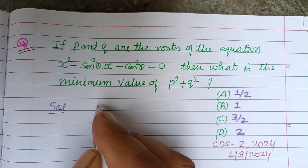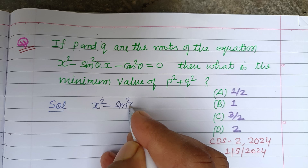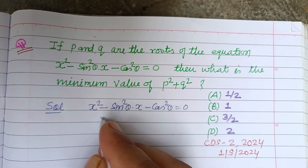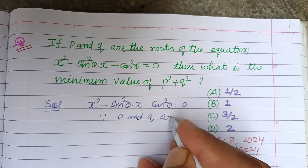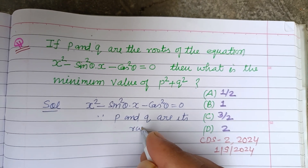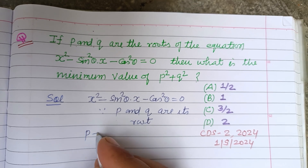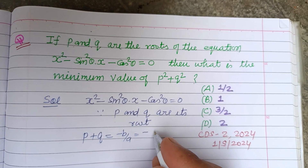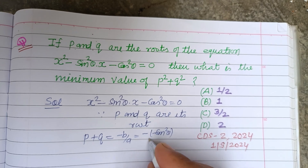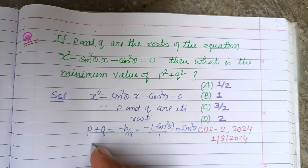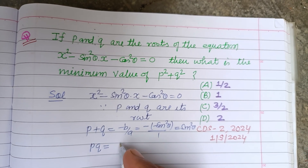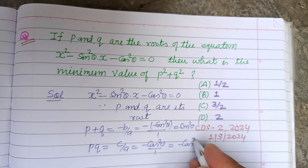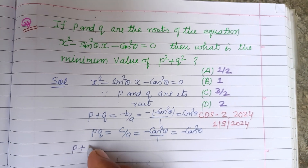We have the equation x² minus sin²θ times x minus cos²θ equals zero. Since p and q are its roots, the sum of roots equals minus b over a. Here b is minus sin²θ and a is one, so p plus q equals sin²θ. The product of roots pq equals c over a, which is cos²θ over one, so pq equals minus cos²θ.